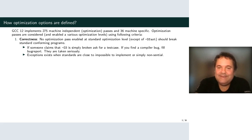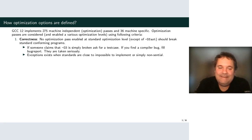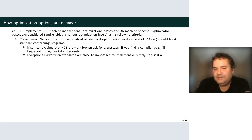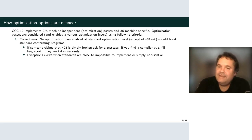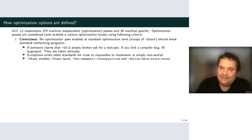You often hear that O3 is broken and produces wrong code — this is usually not true. What can happen is that code is non-conforming and happens to work with O2 but not O3, perhaps because more inlining happened and GCC propagated something it didn't before. Wrong code bugs affecting O3 are taken as seriously as those for O2, and O3 is well tested, though not as much as O2 since most distros build with O2 by default.